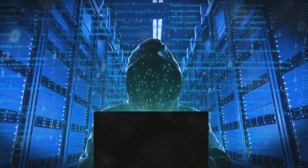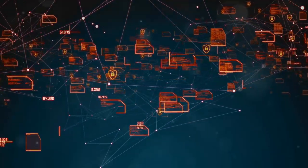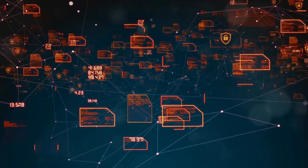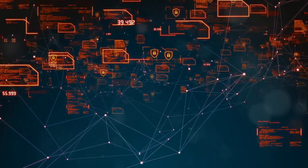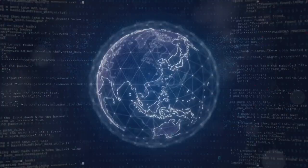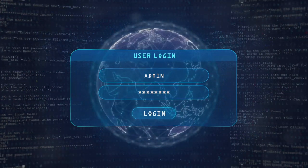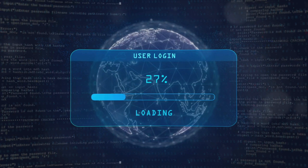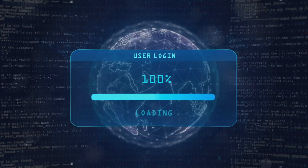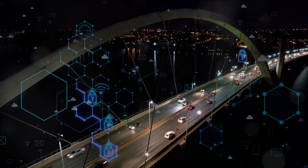Spear phishing isn't the only way attackers can gain initial access — there are numerous methods — but it is one of the most prevalent. Network security isn't just about technology; it's about people too. Protection starts with awareness: understanding the risks and knowing how to spot the signs of a spear phishing attempt, because initial access is just the beginning — the gateway for attackers into your network.